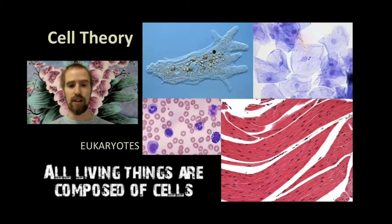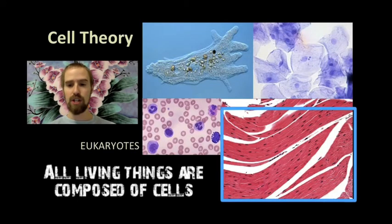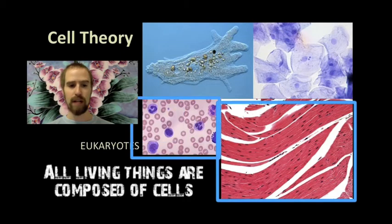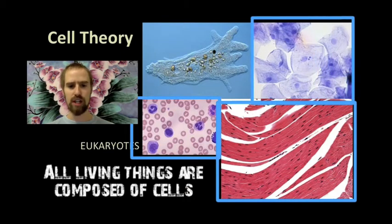Animal cells, on the other hand, appear quite a bit differently. Here we see muscle cells, and red and white blood cells, and some cheek and skin cells. And these are also eukaryotic, but unlike plant cells, they do not have cell walls, only a cell membrane, and they do not have a large central vacuole.